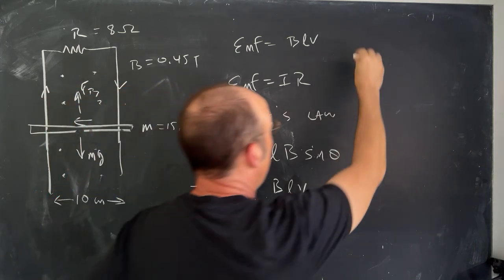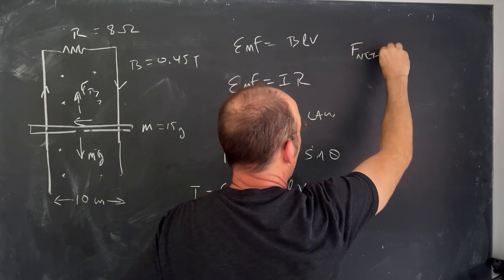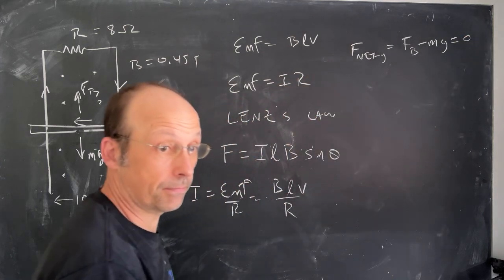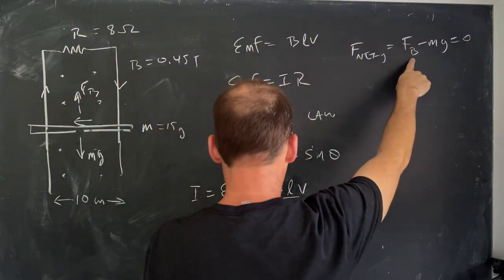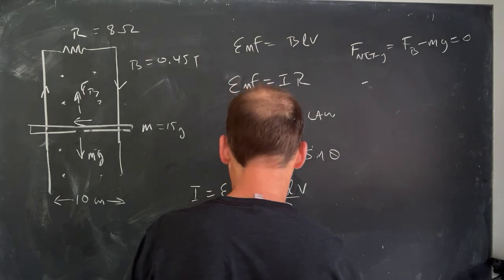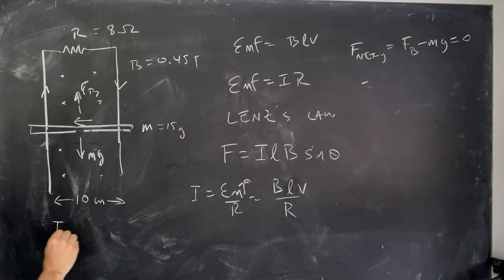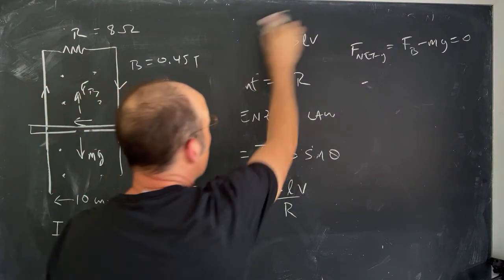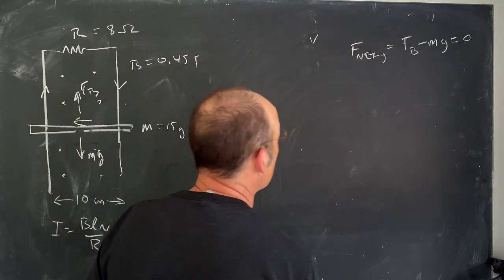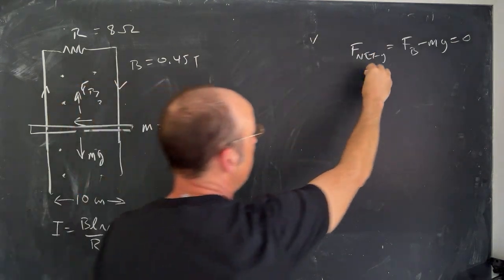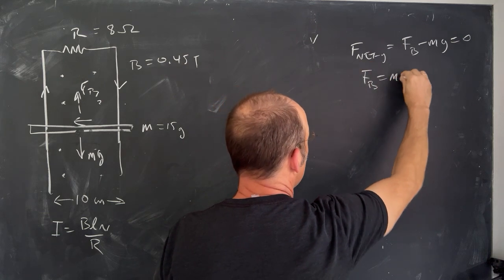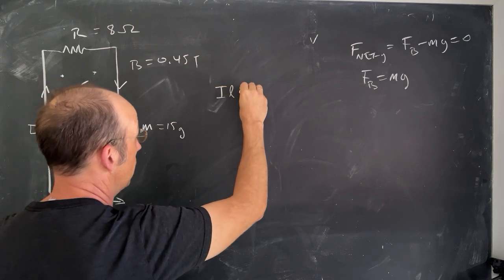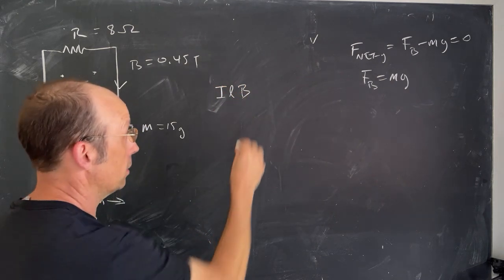Now I can put this in right here. Let's say F net in the Y direction is going to be FB minus MG equal to zero. So if I put that in, I get FB is going to be I. I'm running out of room right here. Let's put this. I equals BLV over R. That's all I needed. Okay. So FB equals MG. So I get I, I'll write it as ILB sine theta. That's the force is equal to MG.